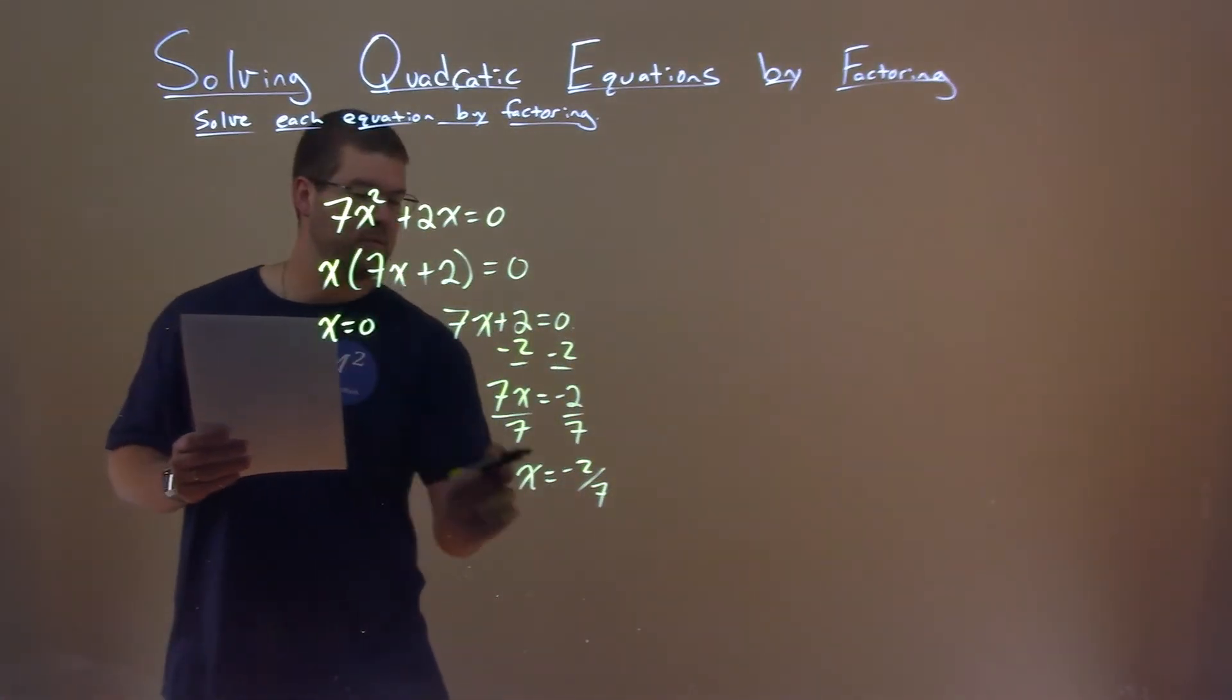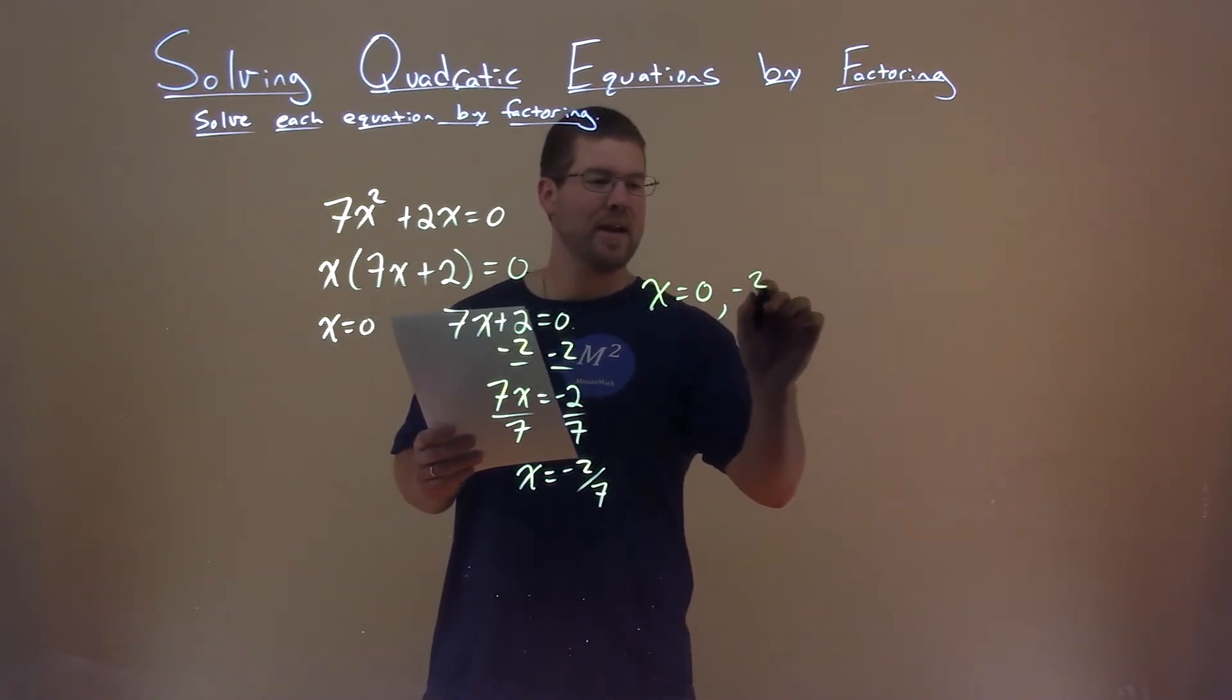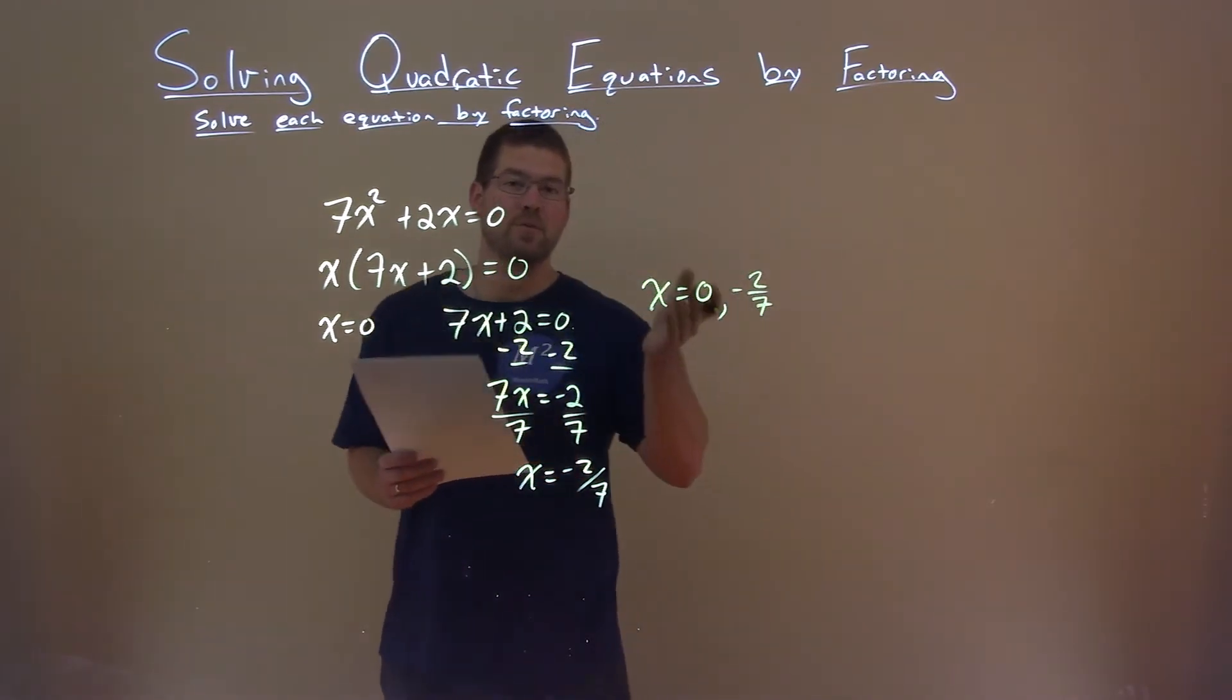We already said x equals 0. Nothing more to do there. And so, my two solutions are x equals 0 and negative 2 sevenths. And that is my final answer.